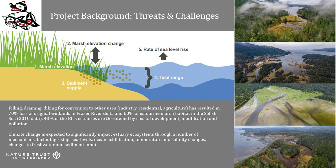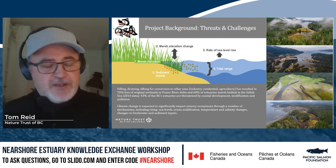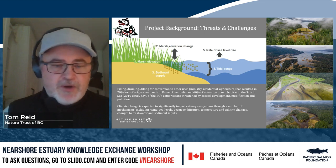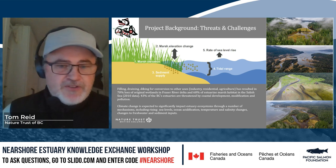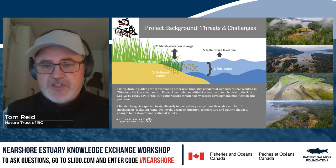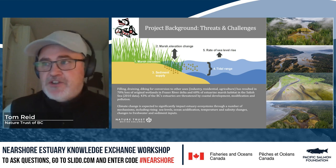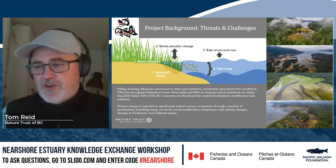One of the challenges is that these abundant low-lying nearshore estuary ecosystems, where rivers meet the ocean, are very popular for development and urban settlements. Statistics from the Fraser show 70% loss of original wetlands in the Fraser Delta, and 60% of estuary and marsh habitat in the Salish Sea has been impacted by development. Just under 50% of those 430 estuaries identified are threatened by coastal development, modification, and pollution. This is coupled with climate change impacts through rising sea levels, ocean acidification, temperature and salinity changes, and changes to freshwater and sediment inputs.